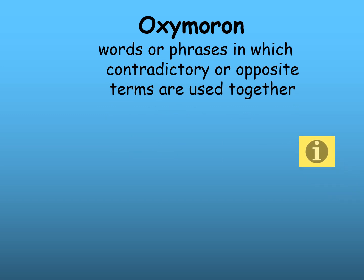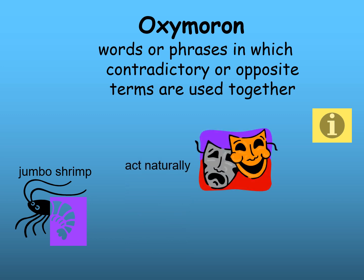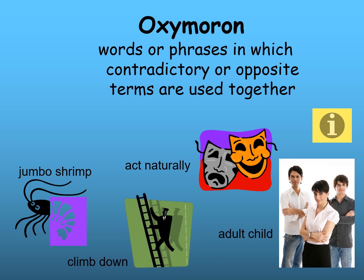Oxymorons are words or phrases in which contradictory or opposite terms are used together. For example, 'jumbo shrimp' — they are contradicting because a shrimp is not jumbo. 'Act naturally' — does she act naturally? No, of course. 'Adult child' — adult and child, how can that be? 'Climb down' — how can I climb down? I have to climb up — climb and down are contradicting, they are opposites. 'Baby grand' — how can something be a baby and grand? These are all oxymorons.